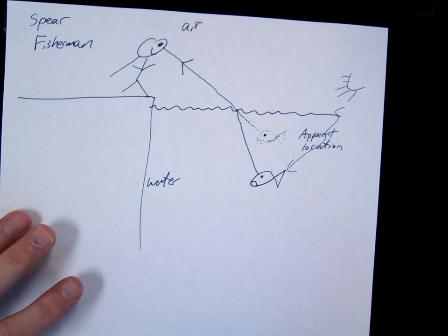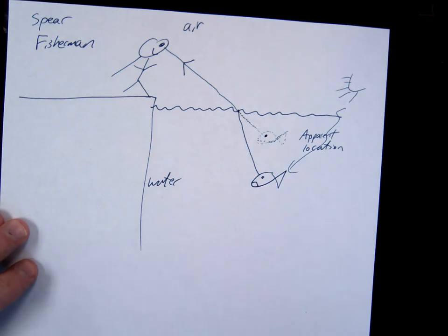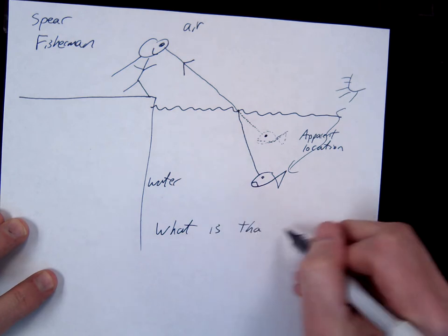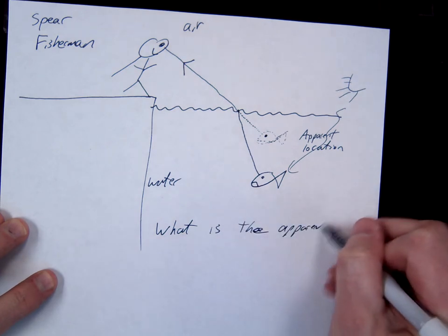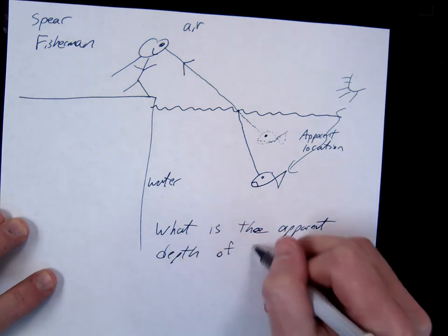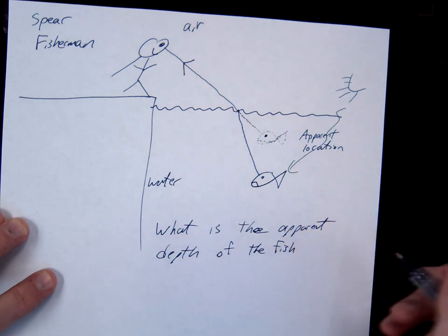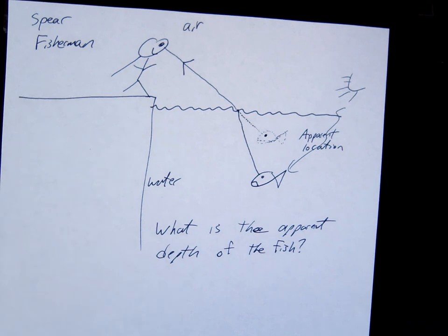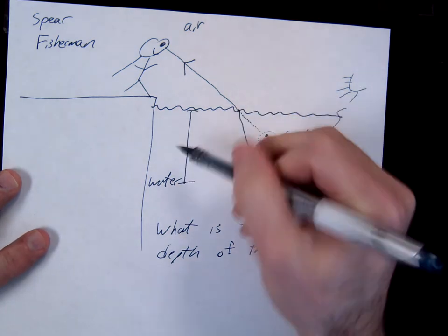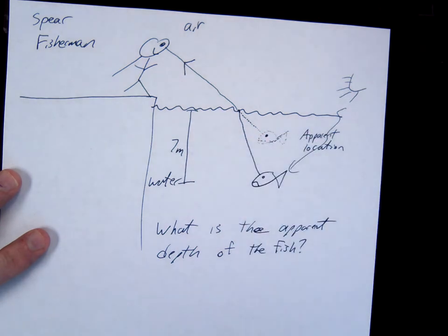All right? So anyway, let's go ahead and do a problem with this. So a problem I might ask you is, what is the apparent depth? We could also ask you the reverse of this. Given the apparent depth, what is the true depth? In which case, you'll kind of do the opposite of how we're going to solve this. So let me give you some numbers. Let's say the true depth of the fish is 7 meters.